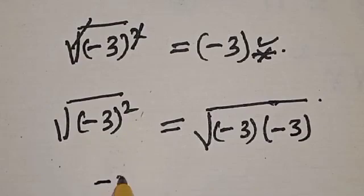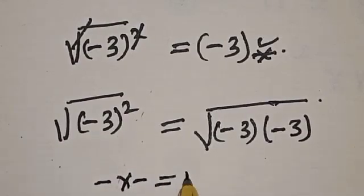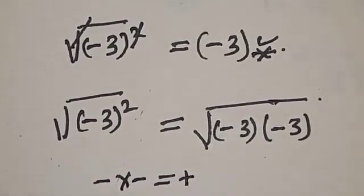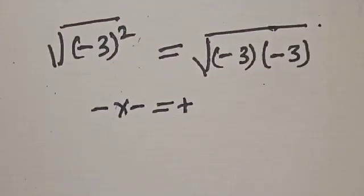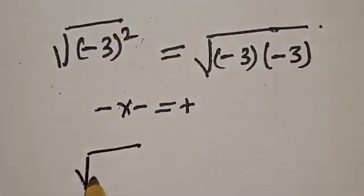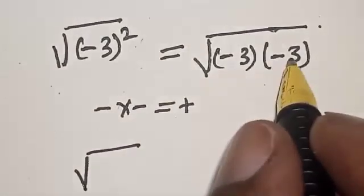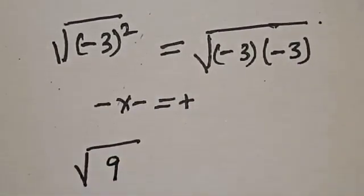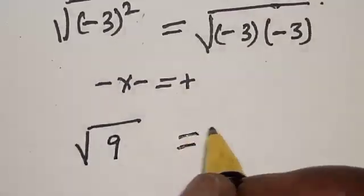Then we have square root of minus 3 times minus 3, that will be 9. Then this is equal to square root of 9, and this one will cancel. This is equal to 3. That is our final answer.